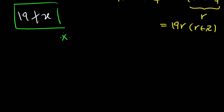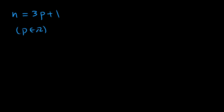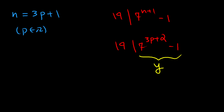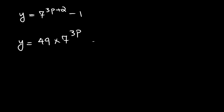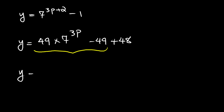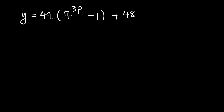Now let's examine the second scenario, where n equals 3p plus 1. We know that 19 divides 7 to the power of n plus 1 minus 1, so 19 divides 7 to the power of 3p plus 2 minus 1. Let's call this y. We can rewrite y as 49 times 7 to the power of 3p minus 1 plus 48, and similarly factor 7 to the power of 3p minus 1 as 342 times some integer q.